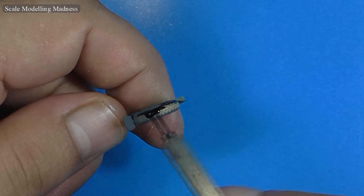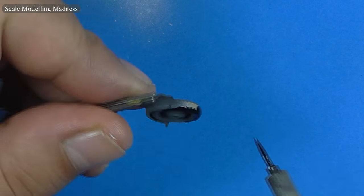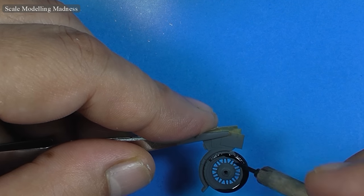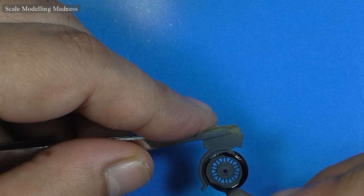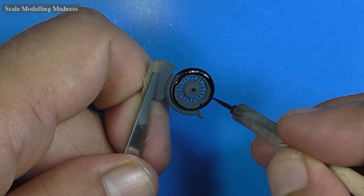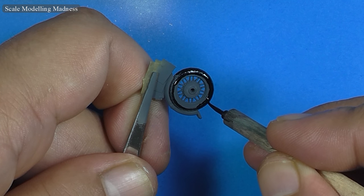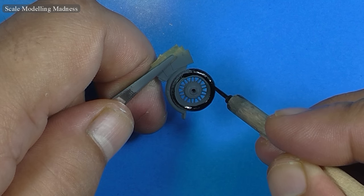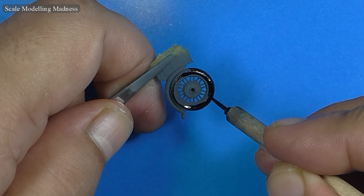The tire is hand painted with Tamiya rubber black. The motorcycle is now ready for final assembly.